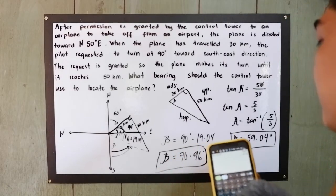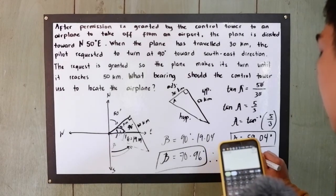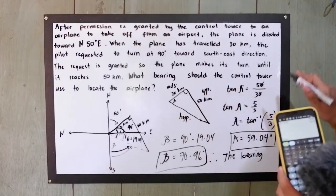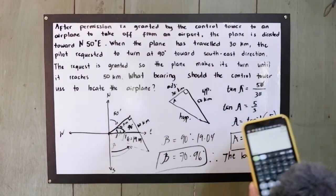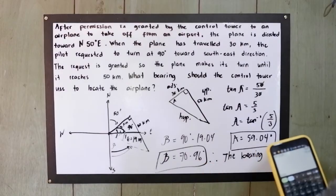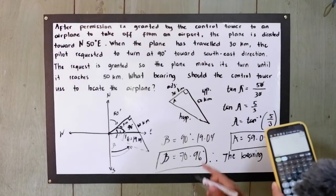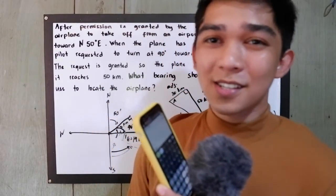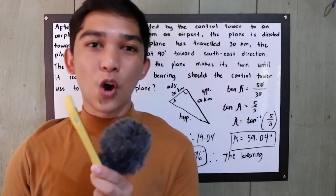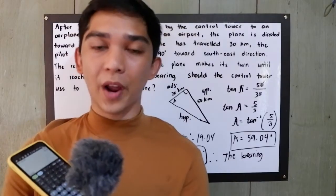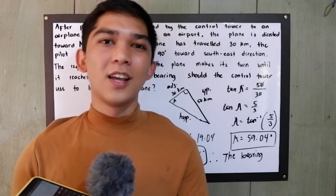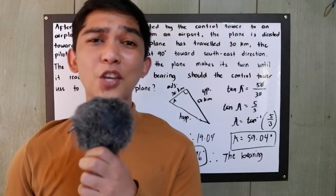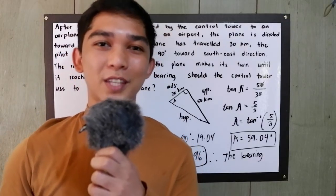Therefore, the bearing angle beta = 90 minus 19.04 = 70.96 degrees. The bearing the control tower should use to locate the airplane is 70.96 degrees. That is another application of right triangles — the bearing. I hope you understand our lesson and its application. Thank you for watching Signor Pablo TV.